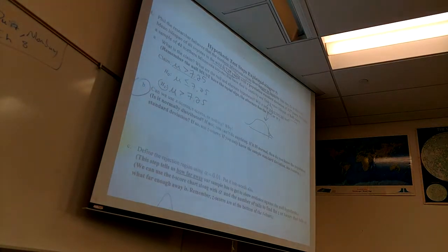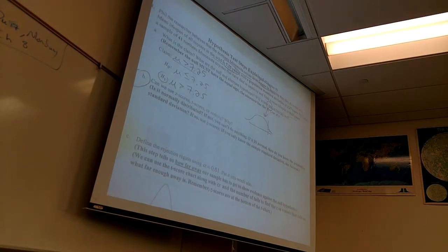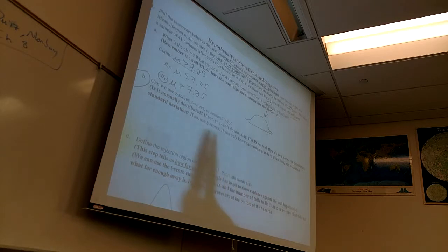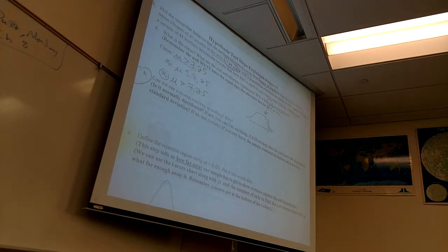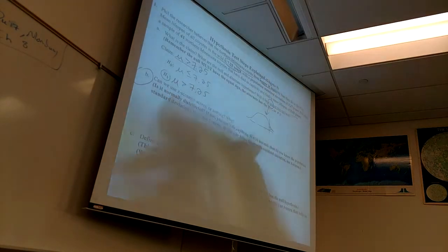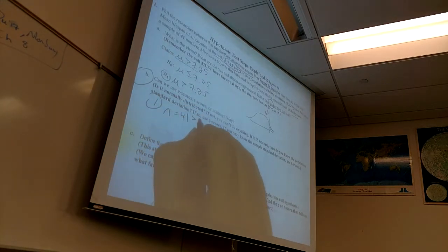Part B is old news. What part of this problem will tell me — there are two things I need here. Is it normally distributed? I have to know it's normal before I can use Z or T. Do we know if this is normally distributed? Does it say it is? No. But the sample size is bigger than 30, so it's normal because N equals 41, which is greater than 30.